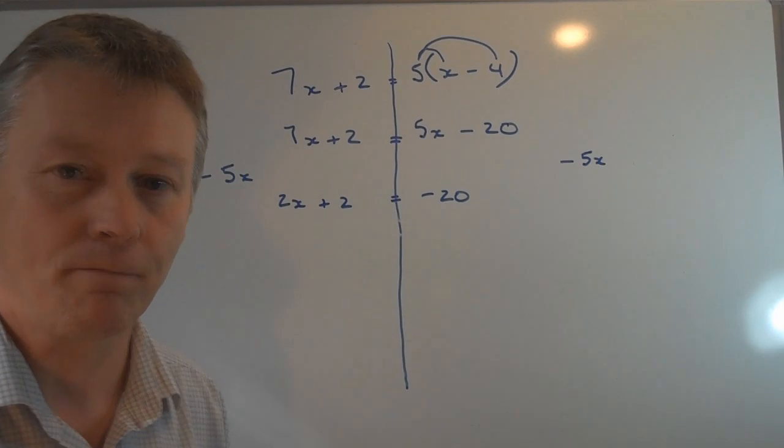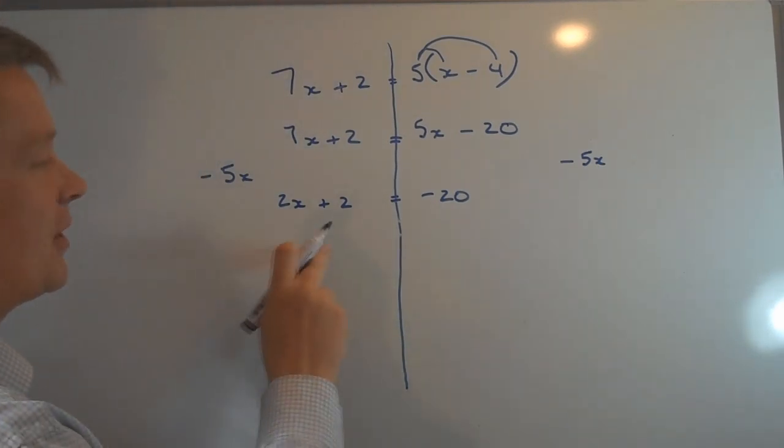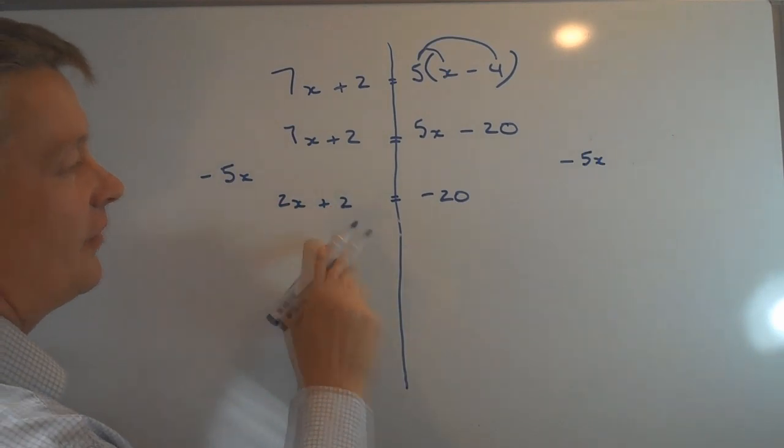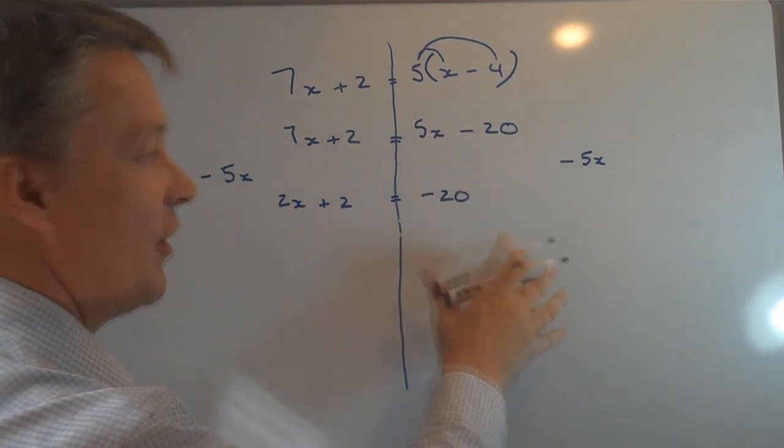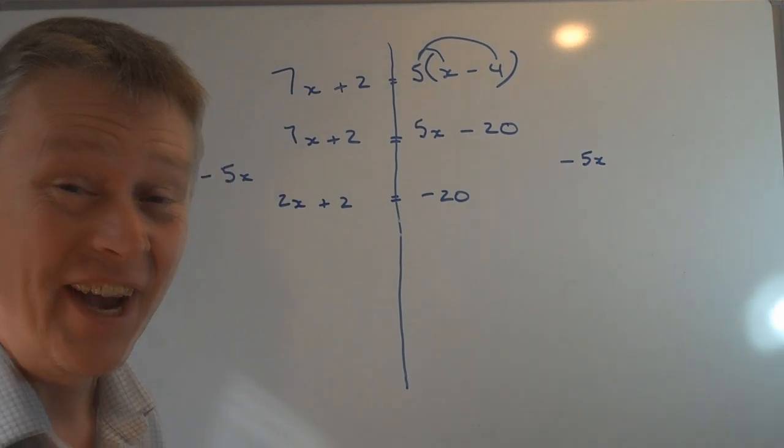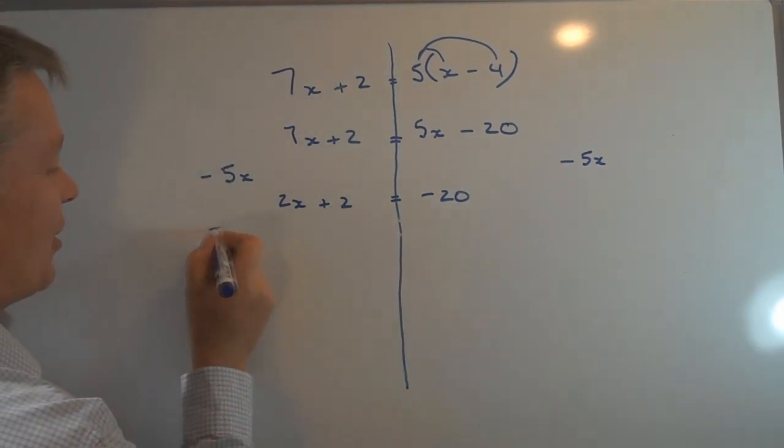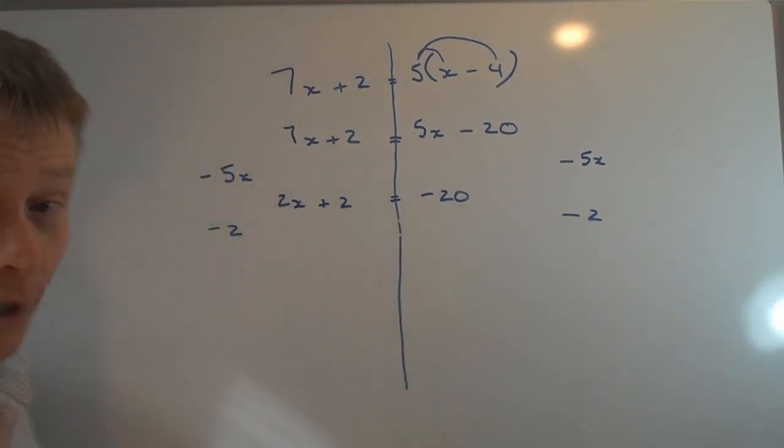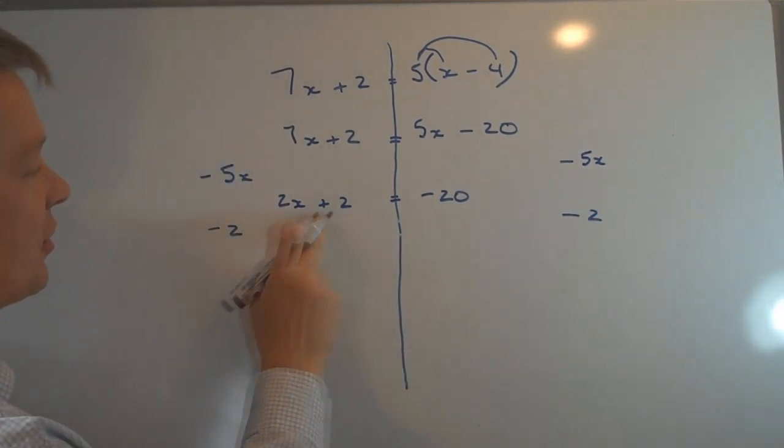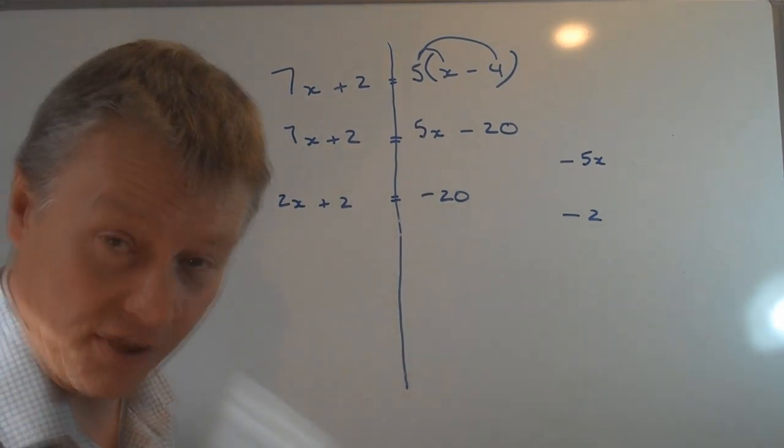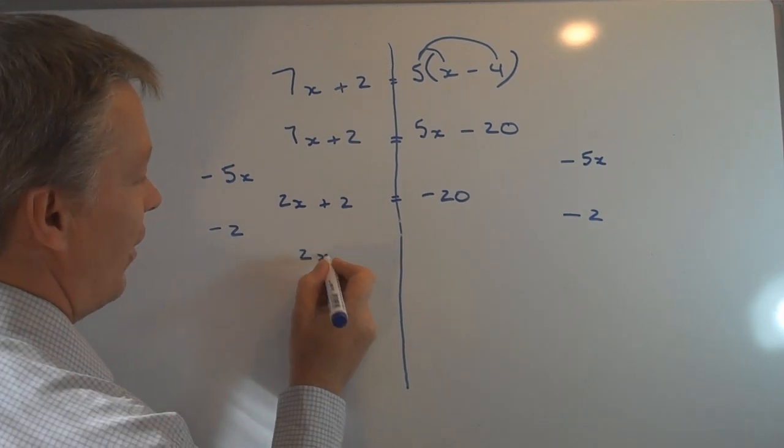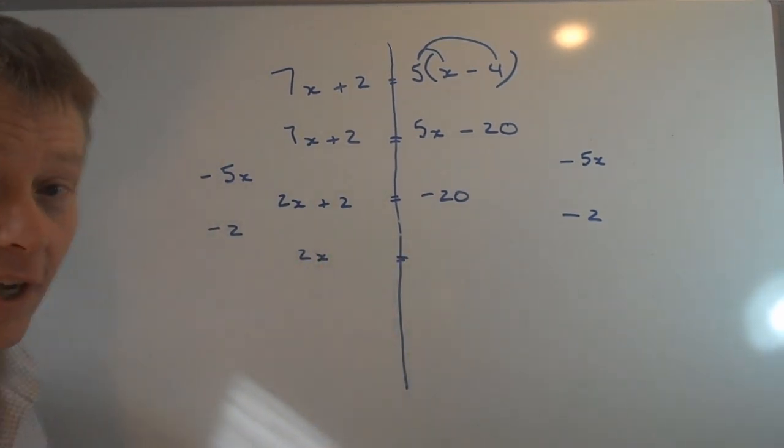Now I'm in a position where I have a positive 2 on here that I really want to have at the other side. So what I'm going to do is I'm going to take 2 away from both sides of the equation. If I take 2 away from this side, positive 2 take away 2 cancels itself out, it's 0, so I'm left with 2X equals.